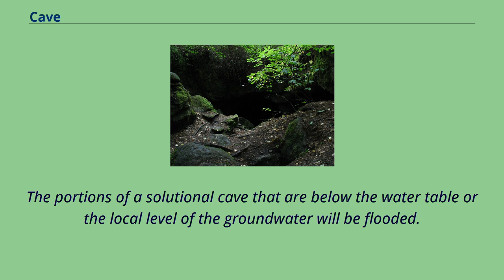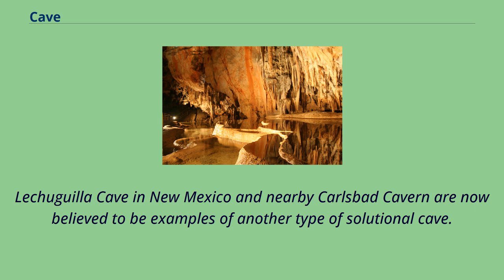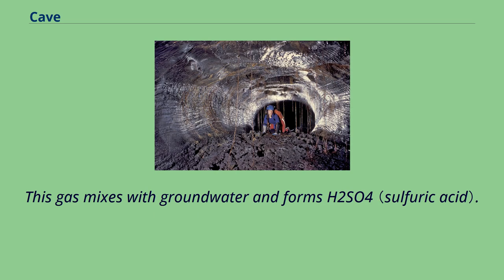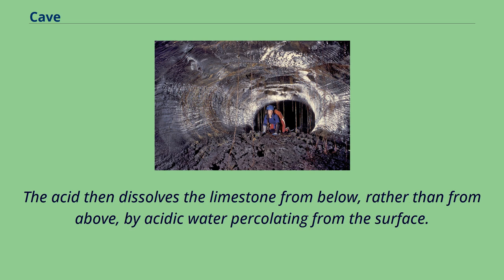The portions of a solutional cave that are below the water table or the local level of the groundwater will be flooded. Letugia Cave in New Mexico and nearby Carlsbad Cavern are now believed to be examples of another type of solutional cave. They were formed by H2S gas rising from below, where reservoirs of oil give off sulfurous fumes. This gas mixes with groundwater and forms H2SO4. The acid then dissolves the limestone from below, rather than from above, by acidic water percolating from the surface.